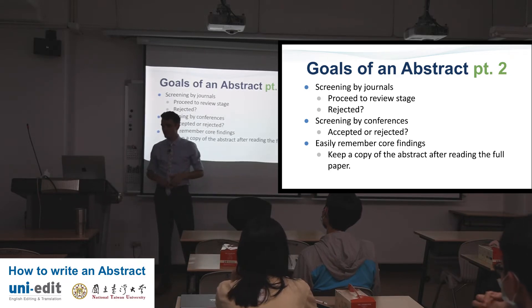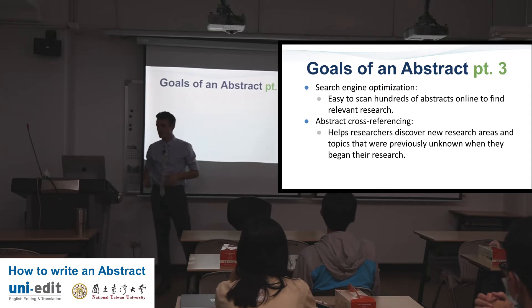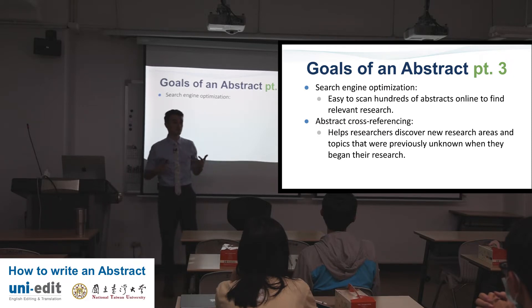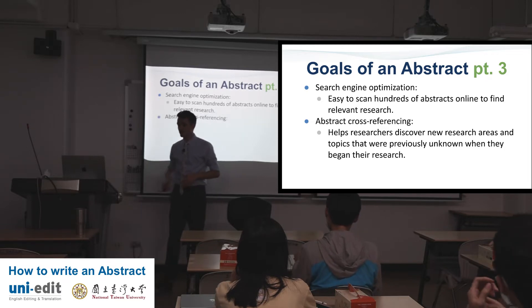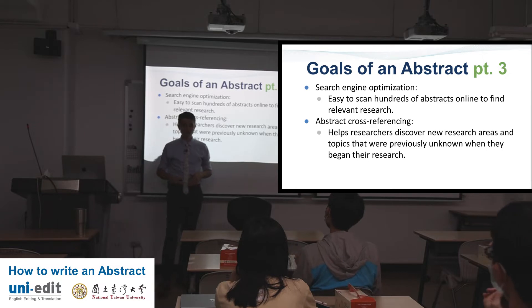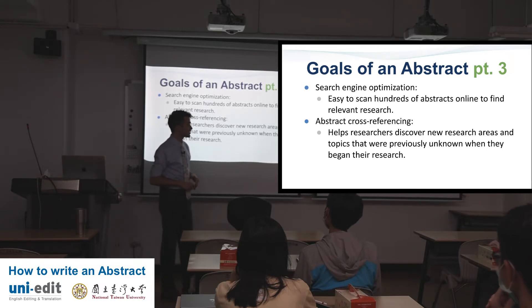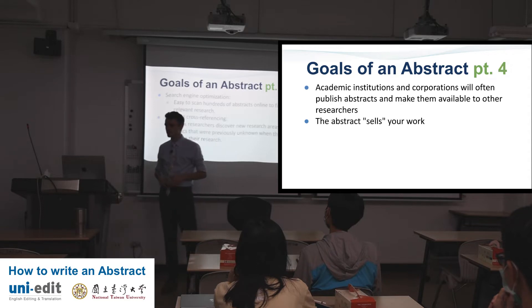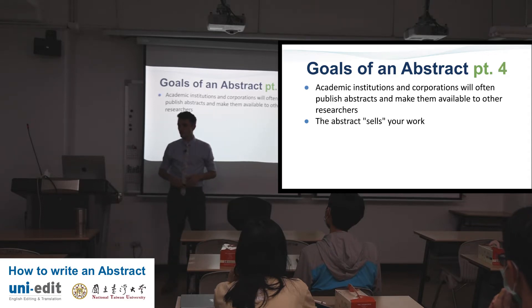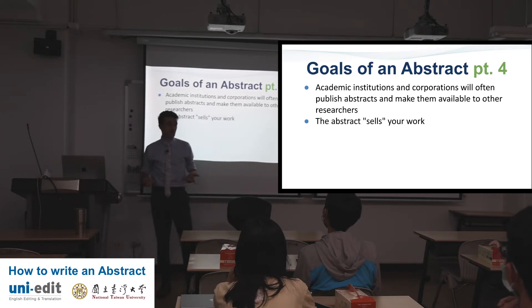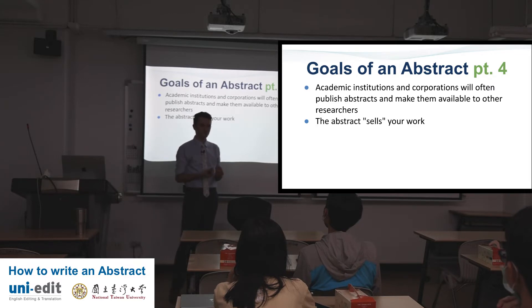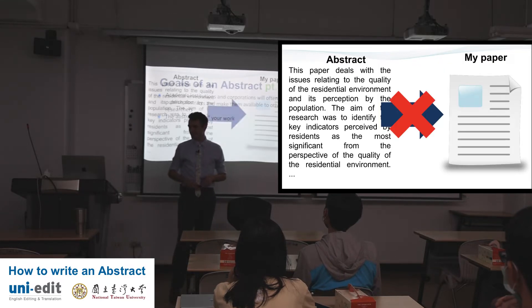Keep a copy of abstracts after reading the full paper — it's good for easy-to-remember core findings. Part three: search engine optimization. When you're searching for an article in your field, it's easy to scan hundreds of abstracts online to find relevant research. Abstract cross-referencing helps researchers discover new research areas and topics. Academic institutions and corporations will often publish abstracts and make them available to other researchers. The abstract sells your work — your abstract is probably the most like a salesperson you should be in your paper.